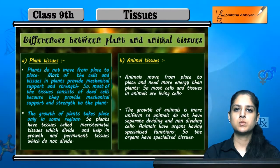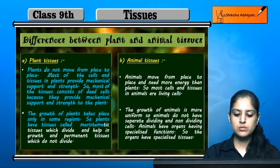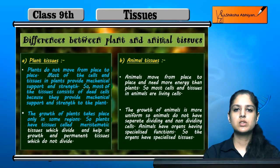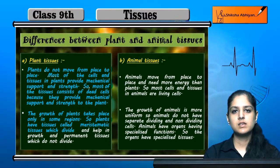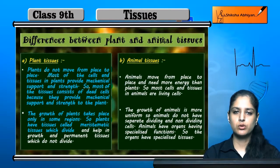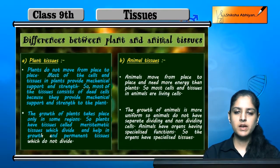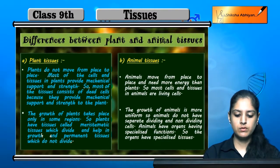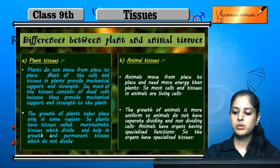Growth in plants occurs only in certain regions. The growth tissues in plants are called meristematic tissues, which divide and help in growth. Permanent tissues, on the other hand, do not divide.